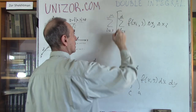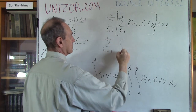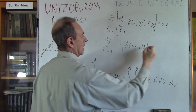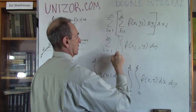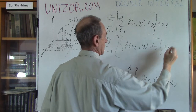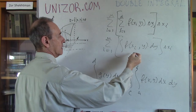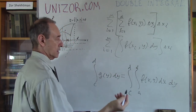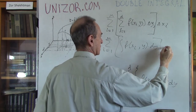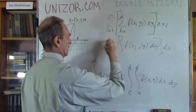And now this looks like: sigma from i = 1 to m of the integral from c to d of f(x_i, y) dy, times Δx_i. This is some kind of a function of x_i. And the whole thing, in the limit as Δx_i goes to zero, becomes an integral from a to b.